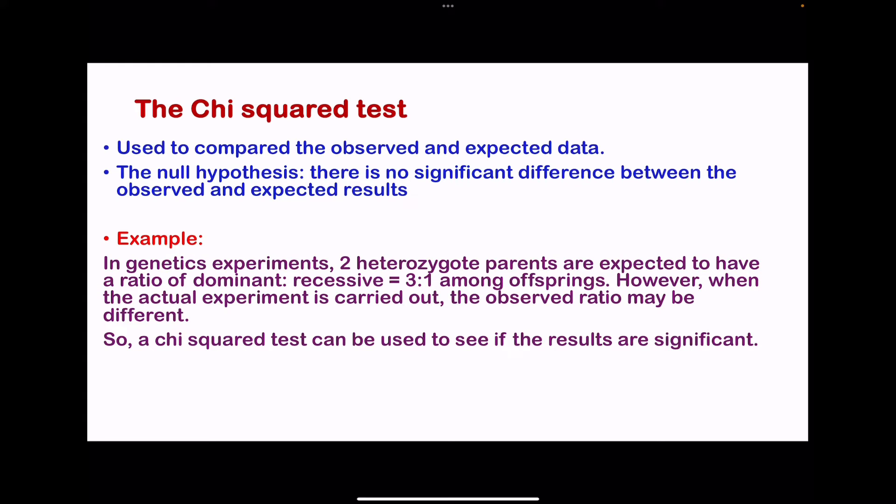A good example is in genetic studies. We have two heterozygous parents. We expect the ratio of the offsprings to be 3:1, talking about the dominant recessive in the phenotype. However, when the observed is different from the expected, then we could carry out a chi-square test to see if the difference between the observed and the expected results is significant.